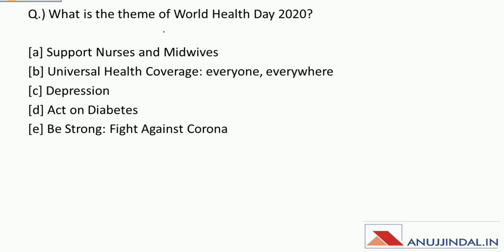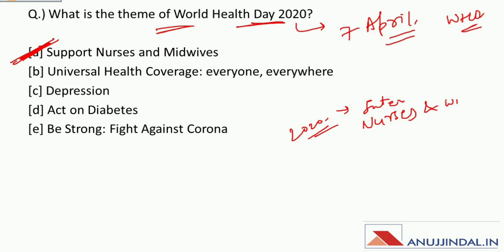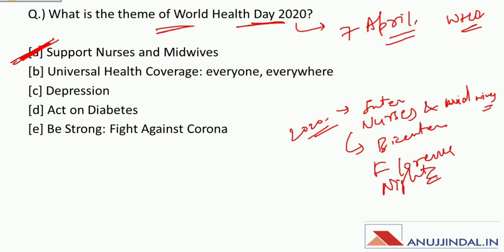What is the theme of World Health Day 2020? World Health Day is observed every year on 7th April by WHO. This year the theme was 'Support Nurses and Midwives.' 2020 is the International Year of Nurses and Midwives, as declared by WHO, to mark the bicentenary of Florence Nightingale — also known as the founder of modern nursing. WHO is headquartered in Geneva and is headed by Tedros Adhanom.